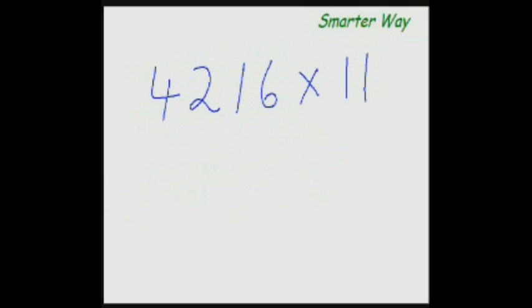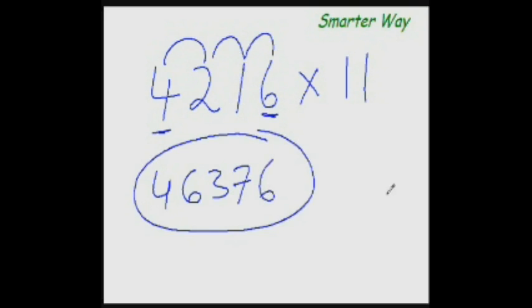Okay, so let's find out what is 4,216 times 11. And you do it this time. So copy the first digit as it is. Next digit would be 4 plus 2 is 6. Next one would be 2 plus 1 is 3. Next one would be 1 plus 6 is 7. And copy this 6 as it is. This is your answer.